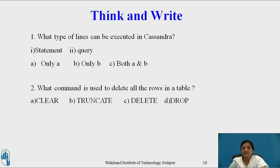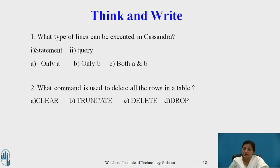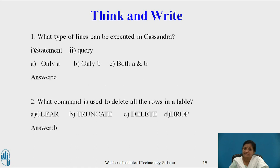What command is used to delete all rows in the table — CLEAR, TRUNCATE, DELETE, or DROP? DROP is used to delete the whole table. DELETE is used to delete one or more rows or columns. CLEAR is not a data-deletion command in databases. Therefore, TRUNCATE is the only command used to delete all rows in the table without deleting the table itself.